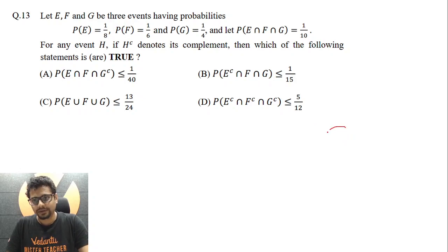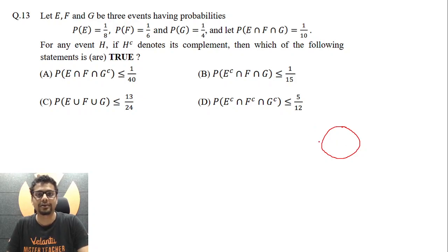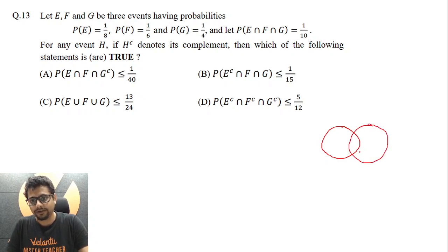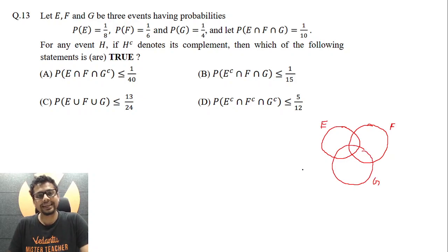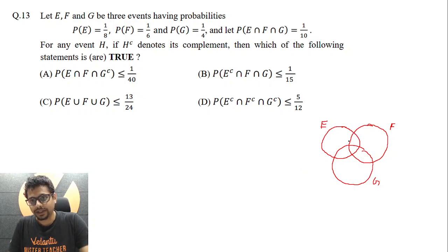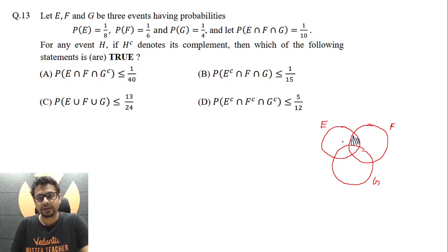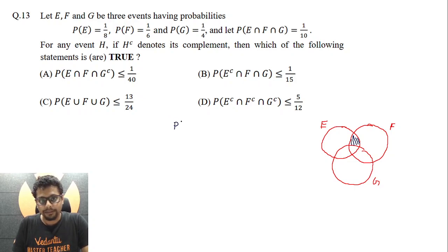To comment upon which options are correct, let's use a Venn diagram. Here, this represents event E, or the favorable outcomes related to event E. This represents event F, and this represents event G. Coming to the first option: probability of E intersection F intersection not G. E intersection F is essentially this region, and E intersection F intersection G should not be occurring, so this is the part we are looking for.